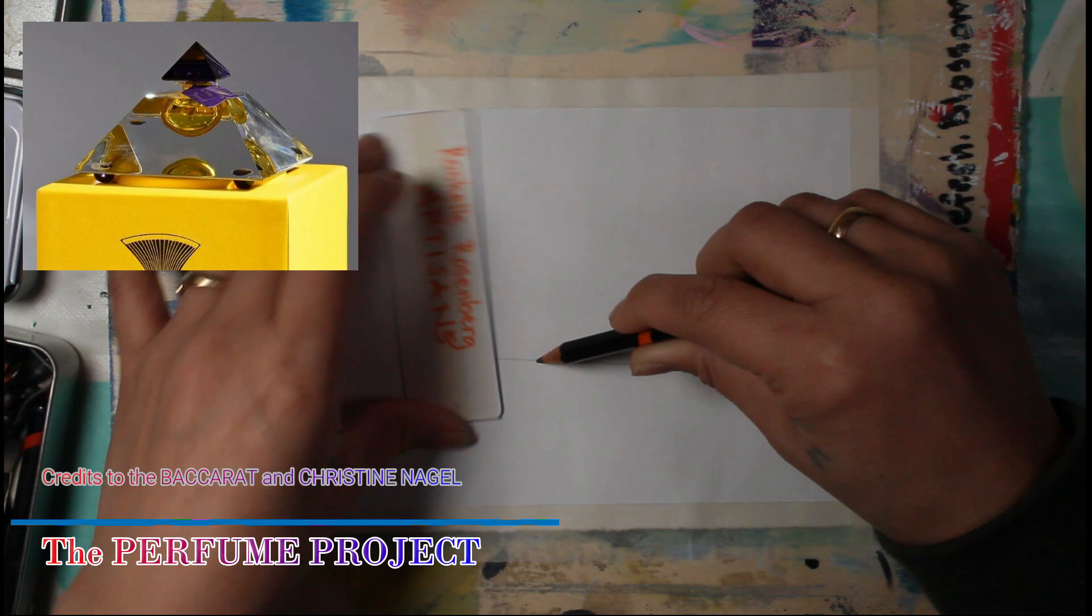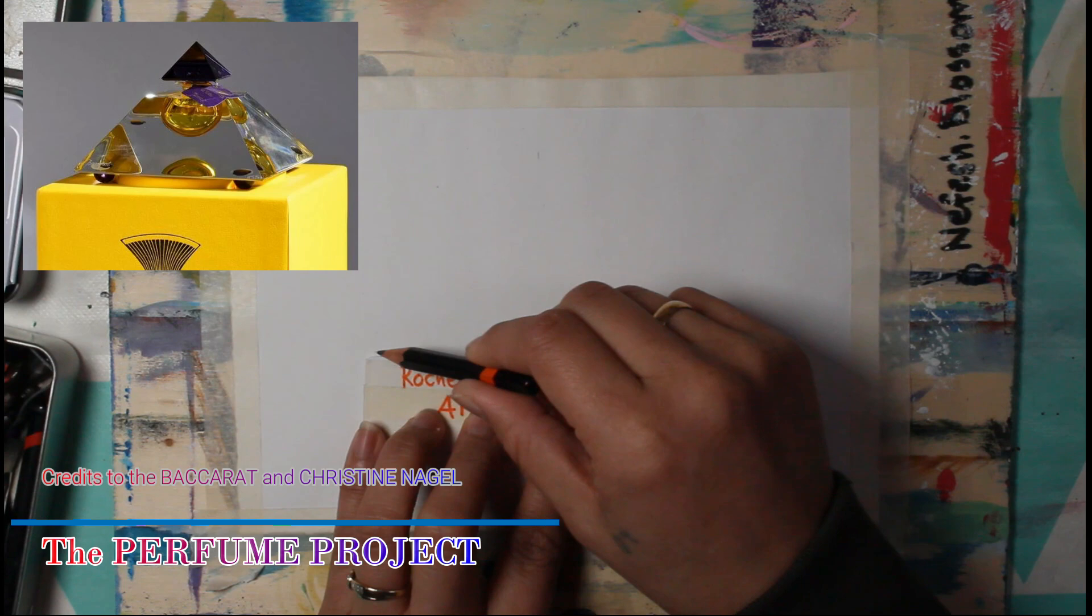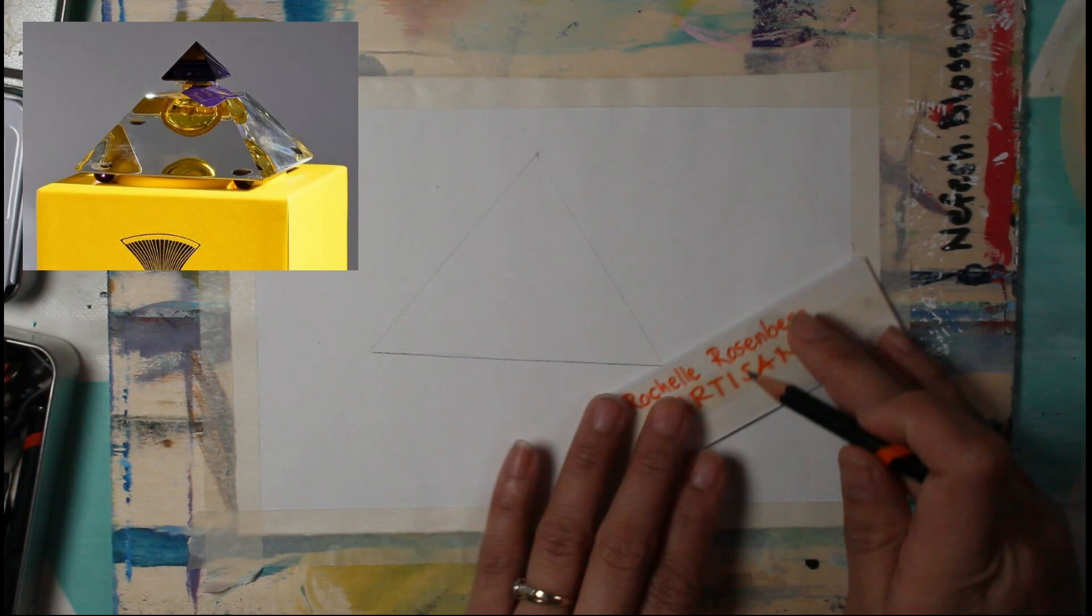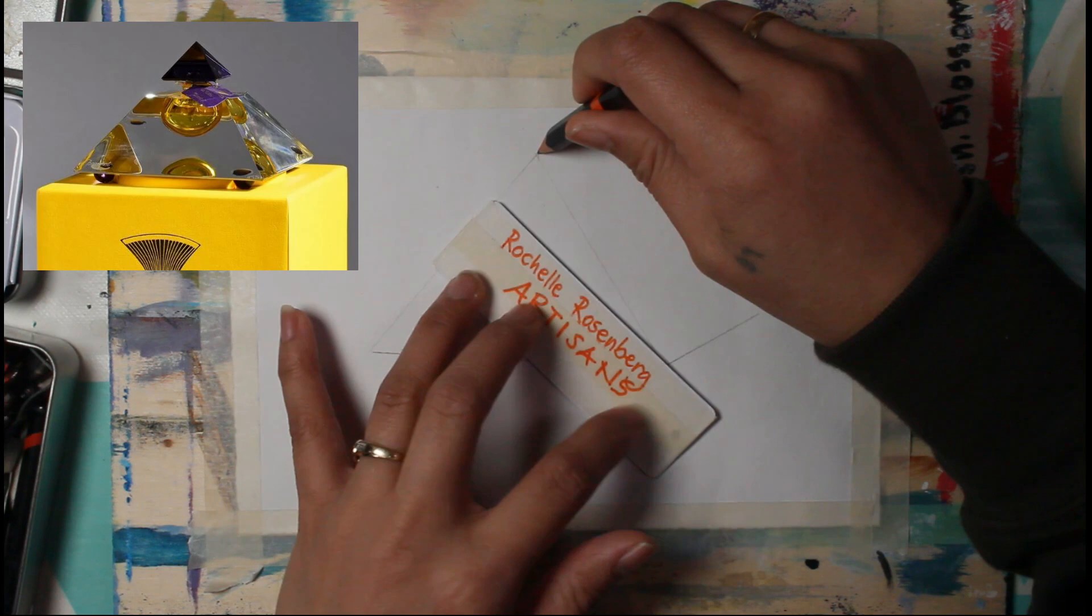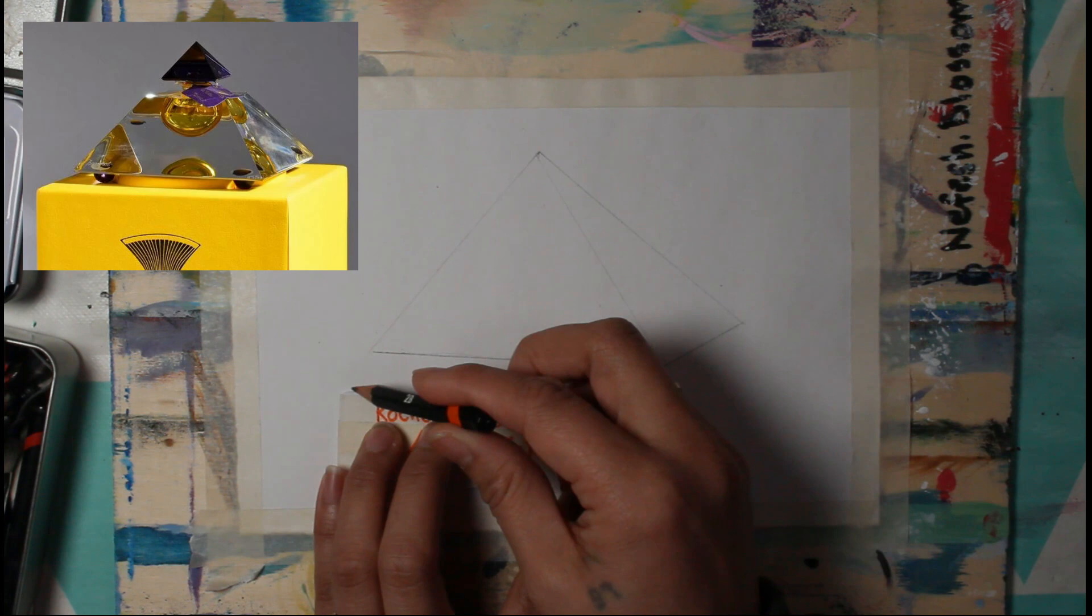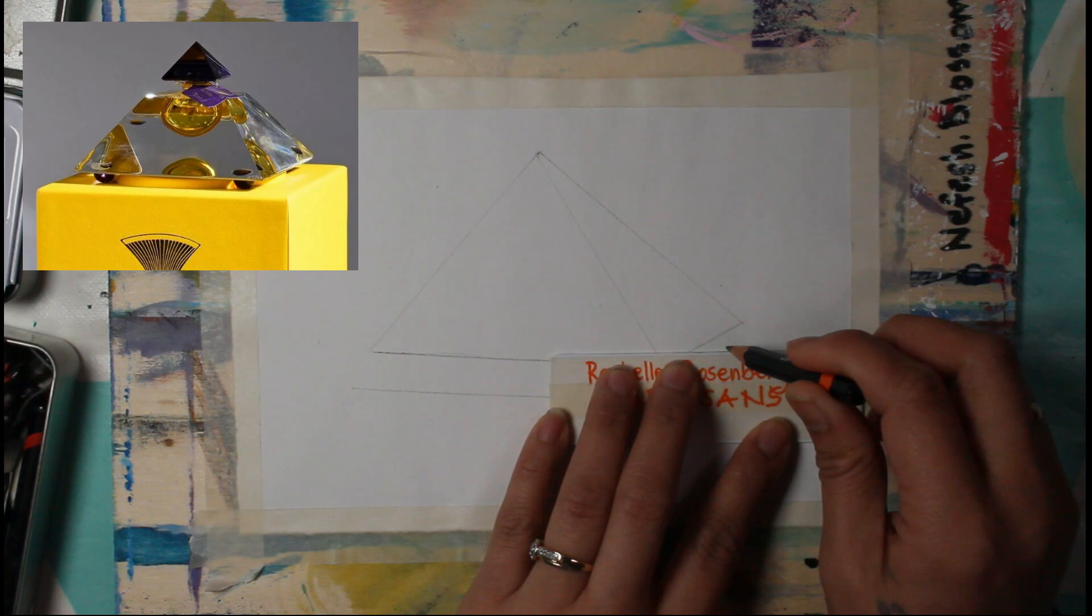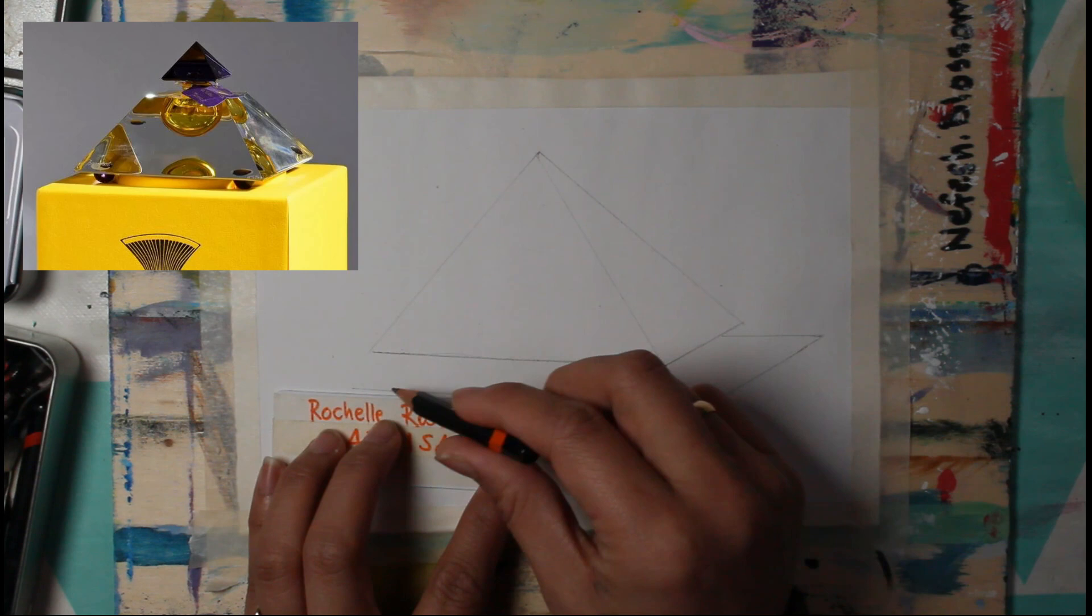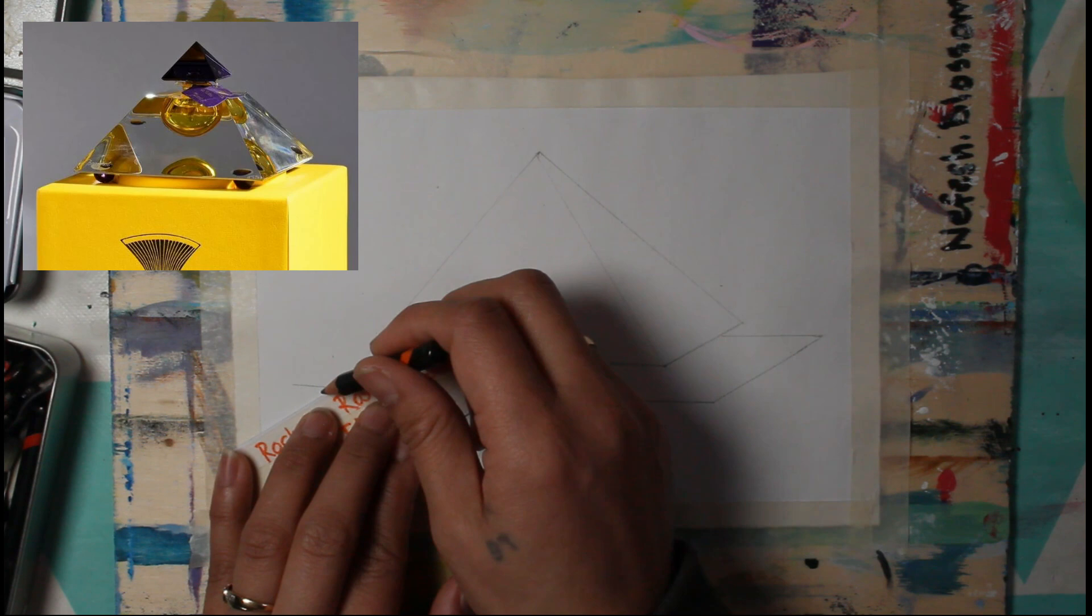This is the second episode of our perfume project and we are creating the most expensive perfumes in the whole world. As you can see on the top left corner of the video, you can see the subject that we are going to draw today. We're going to determine the shapes - the first image I could see is the triangle and the square.